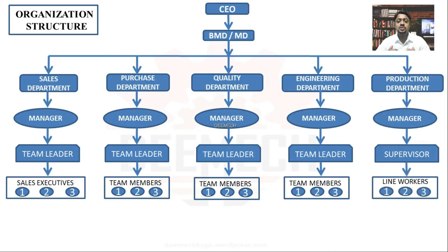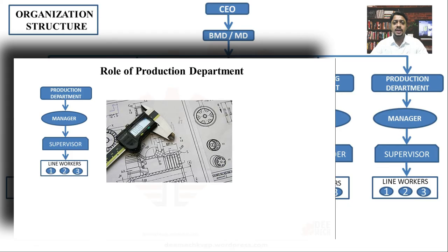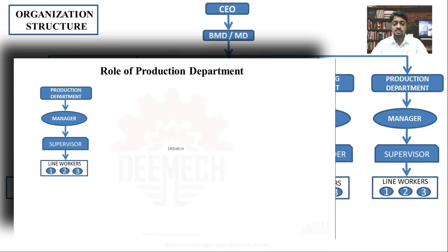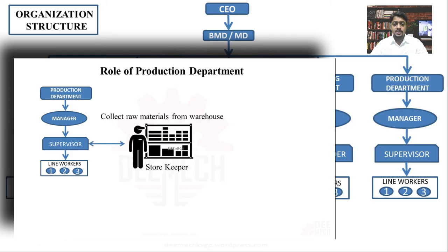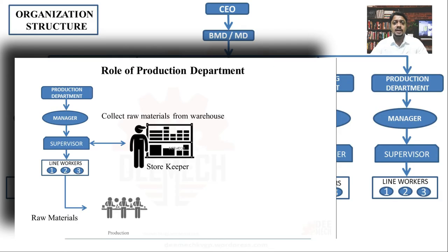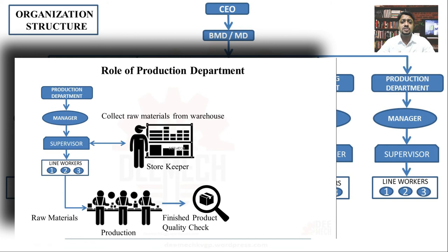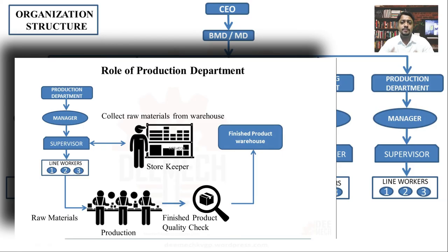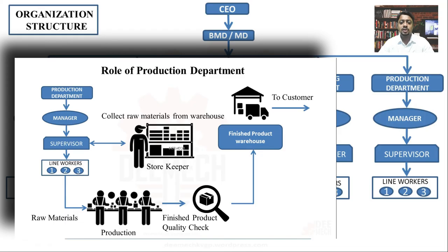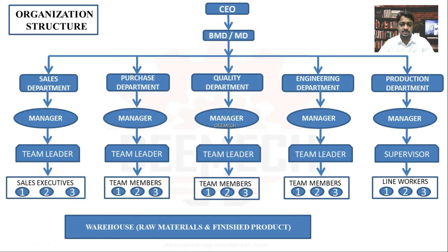Under the production manager there is a process supervisor, and under him various line workers. The production department gets drawings from the engineering department and raw materials from the warehouse through the storekeeper. Using proper machines and processes, they convert raw materials into finished products. Before packaging, the finished products pass a quality check by the quality department. Once approved, they are packed, stored in the finished product warehouse, and the sales department contacts the customer. Once the invoice is cleared, delivery is made through logistics.